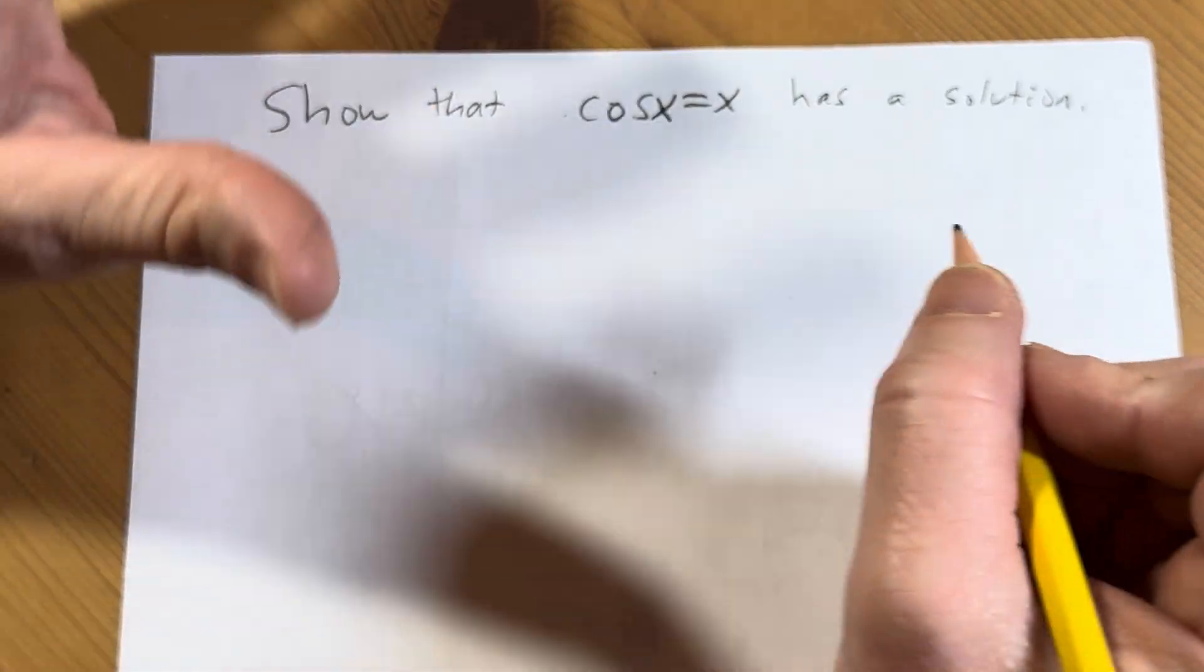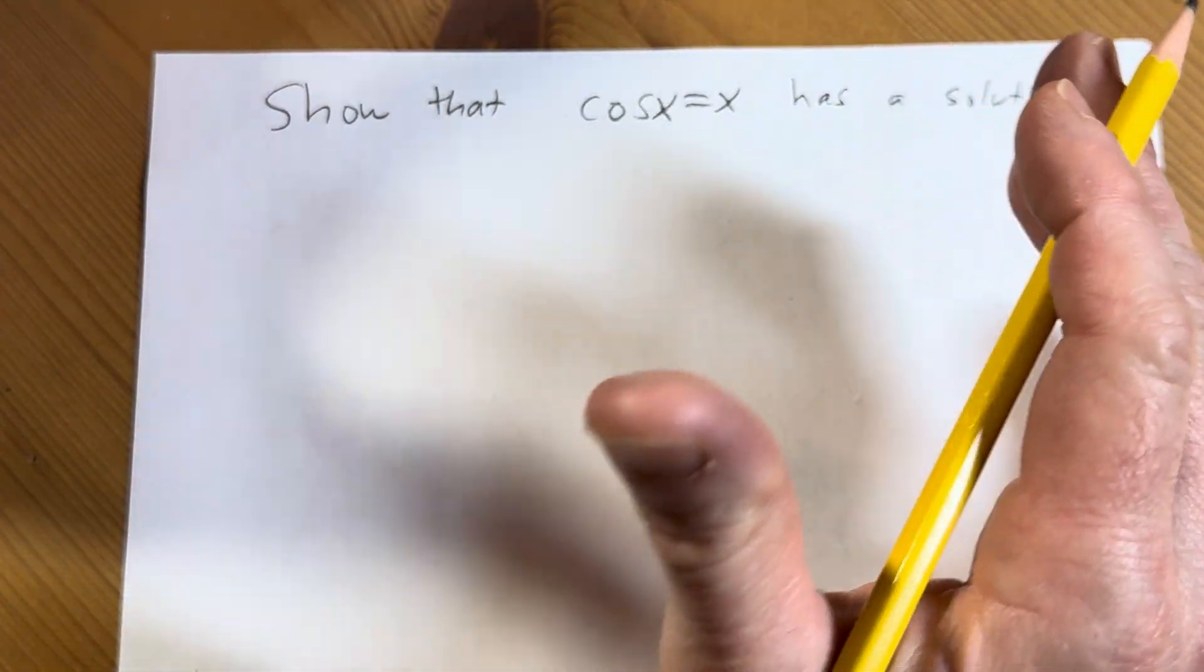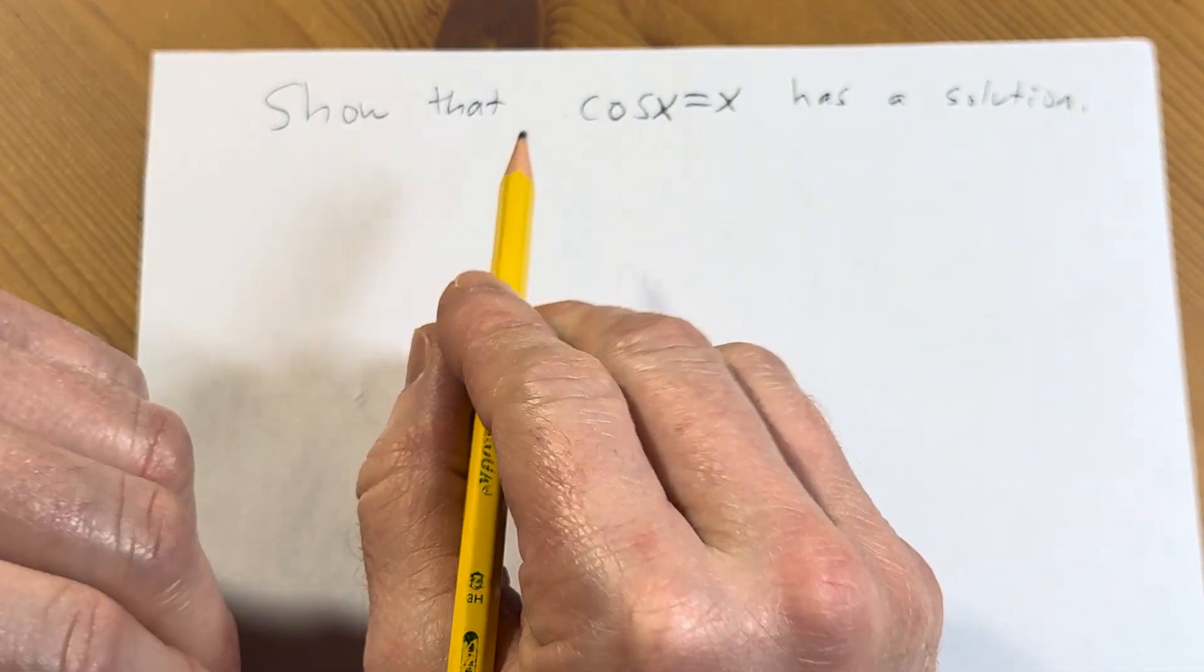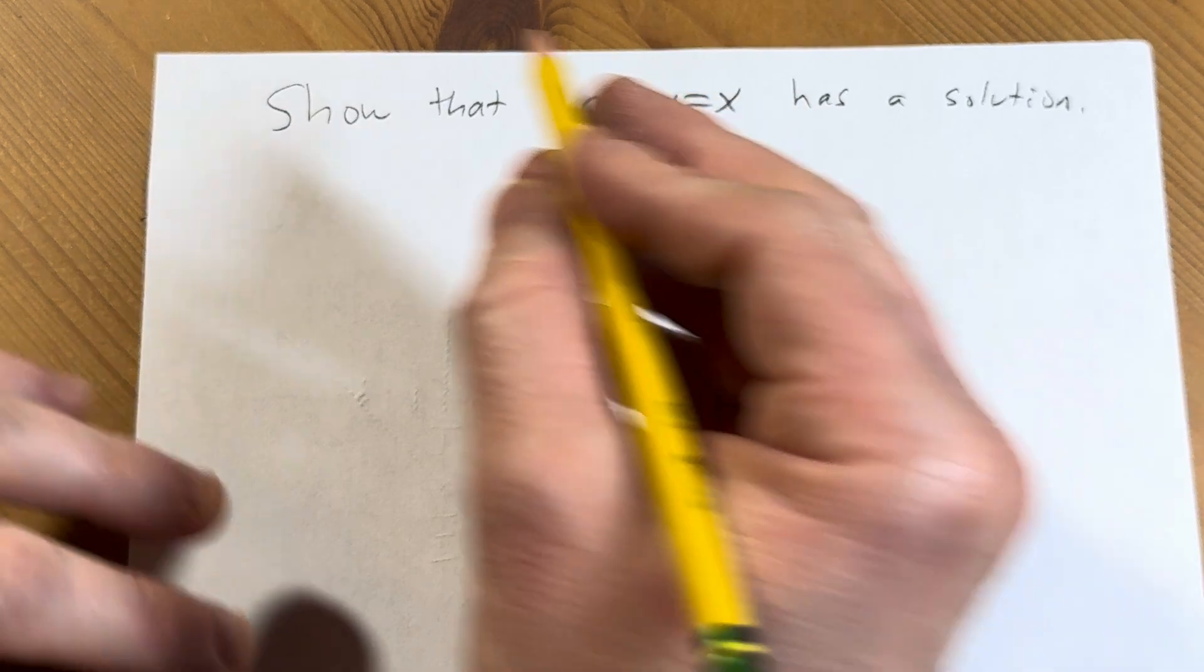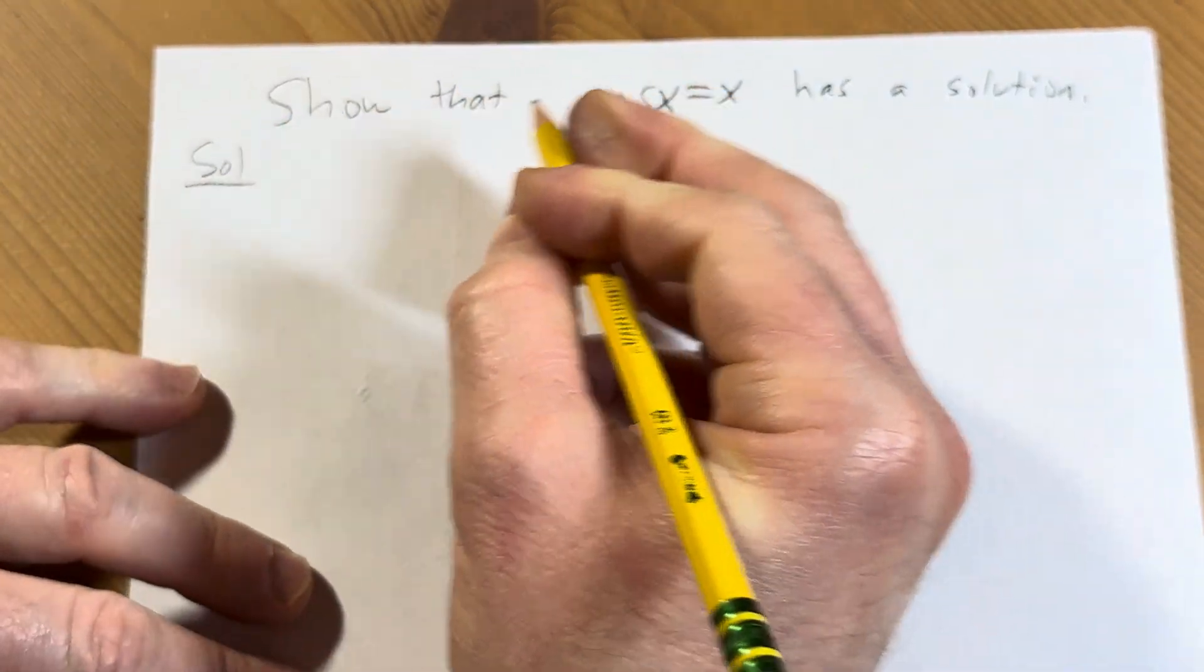Hello everyone, in this short video we are going to do a very quick proof to show that cosine x equals x has a solution. So let's just jump right into it right away.